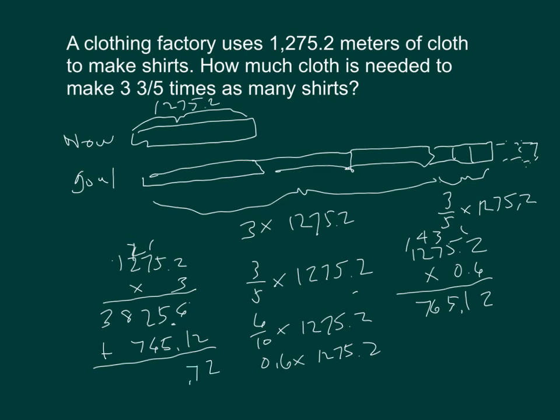Adding those together carefully: 3,825.6 plus 765.12 equals 4,590.72 meters. Make sure to label your answer.